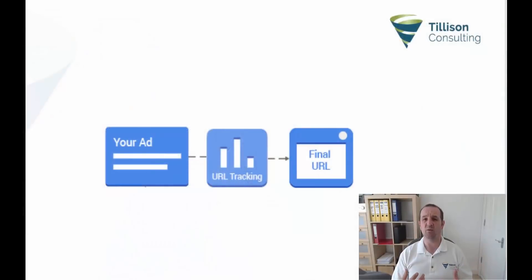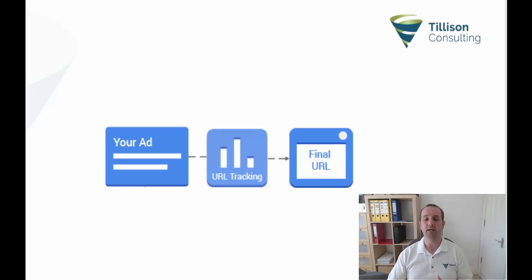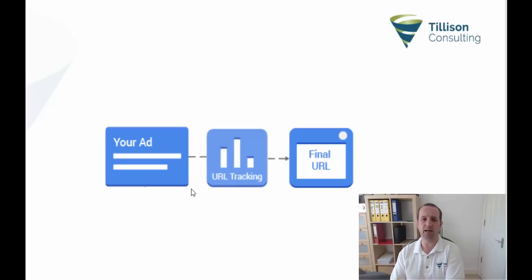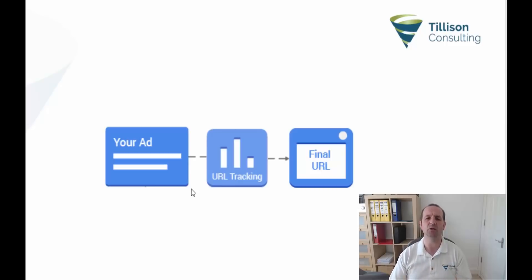So let's first look at what is parallel tracking. What happens at the moment, historically, before you enable parallel tracking, is a user searches Google, they click on your ad, and then they are directed to a URL — this big long URL string with a tracking code in it — and then redirected along to the final URL. So: click the ad, redirect, redirect, land on your page. It's taking a few extra steps, maybe fractions of a second, but it's slowing down that user journey.